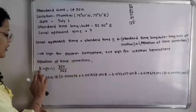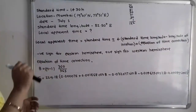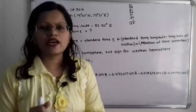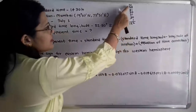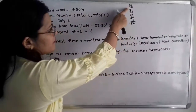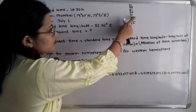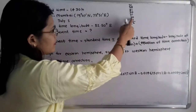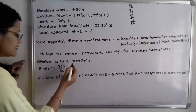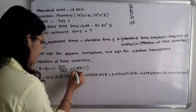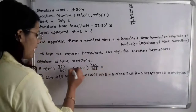To calculate the equation of time correction, we first calculate B, where B = (N − 1) × 360/365, and N is the number of the day. The date is July 1, so we count days from January: January 31, February 28, March 31, April 30, May 31, June 30, plus 1 day of July — giving N = 182. So B = (182 − 1) × 360/365.